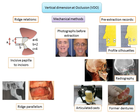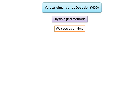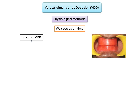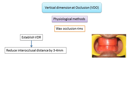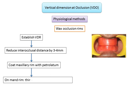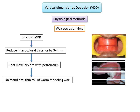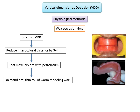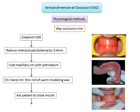Physiological methods for recording VDO. Using wax occlusal rims: first, establish VDR and record the difference between the nose and chin reference points. Make the interocclusal distance approximately 3 to 4 millimeters less than the interocclusal distance at rest. Thinly coat the maxillary occlusal rim with petrolatum. Soften a roll of baseplate wax in a water bath at 130°F, contour it in a triangular shape with the base on the occlusal rim, and attach it to the occlusal surface of the mandibular occlusal rim. Seat the mandibular record base, ensure stability during jaw movement, ask the patient to retrude the mandible and close on the back teeth, then allow the wax to harden before removing.